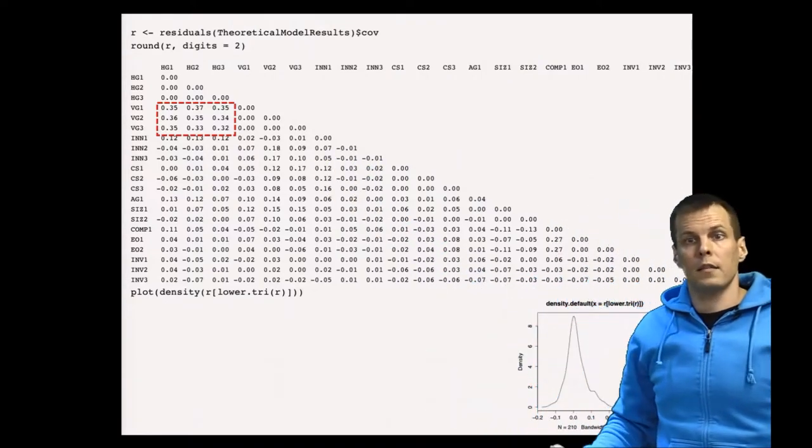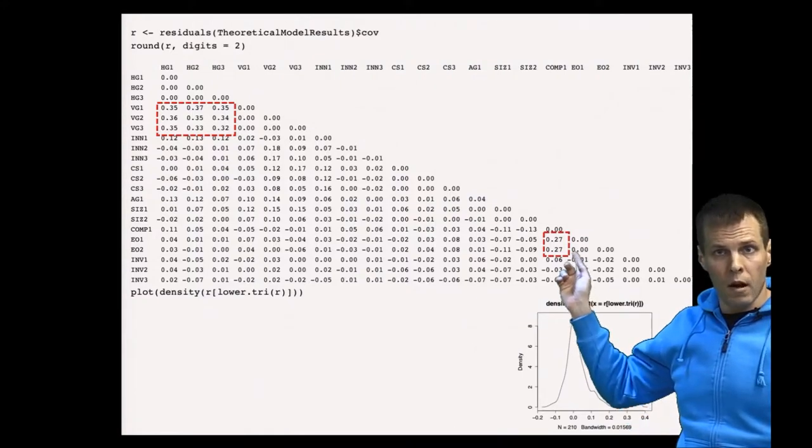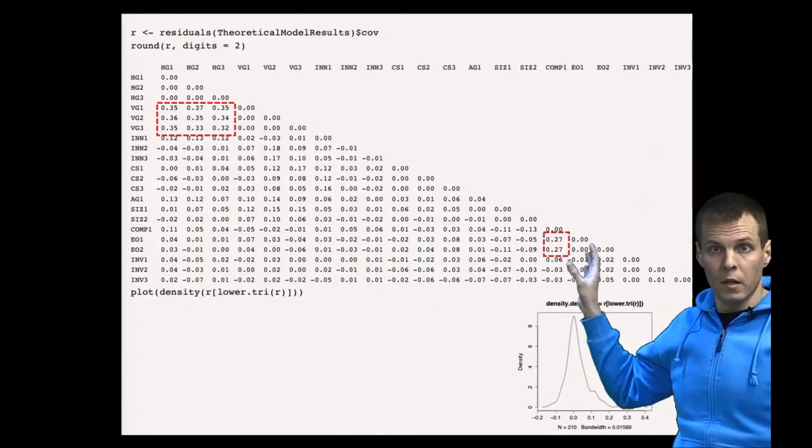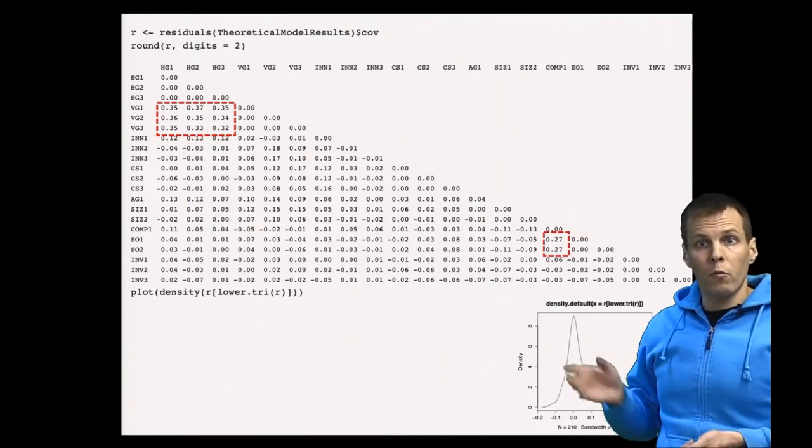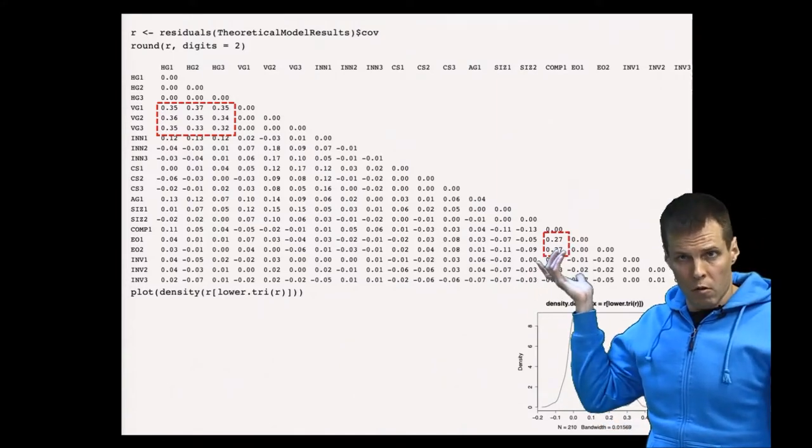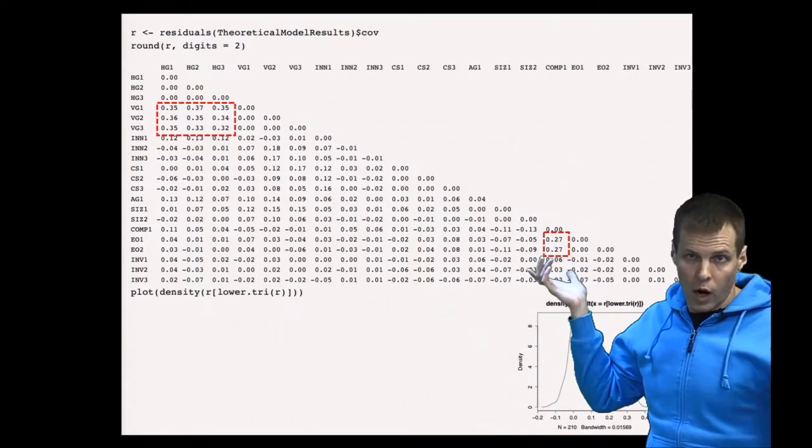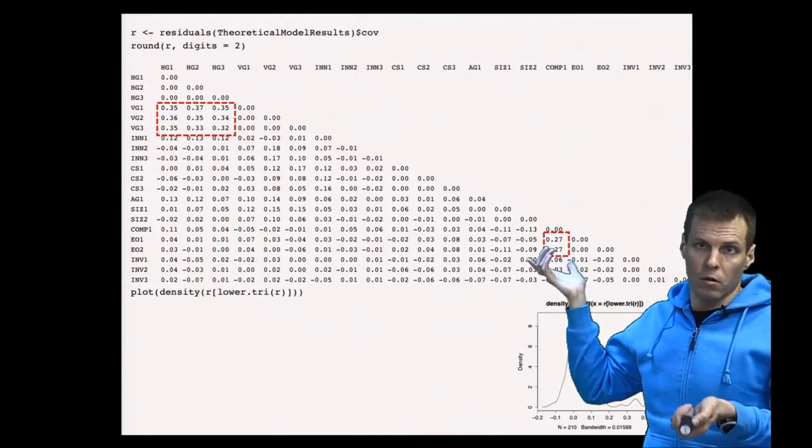Another thing is that these high values also are a single indicator factor I constrained to be uncorrelated with other factors as well. That way, you can look at the residuals, look at which correlation the model doesn't explain well, and then think about what influences that correlation in your model and whether that part of your model is correct.